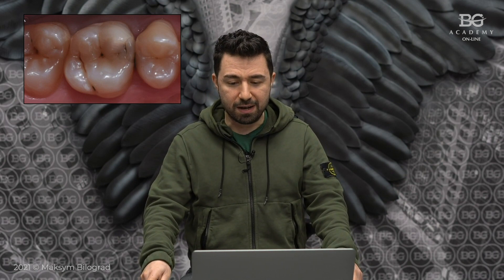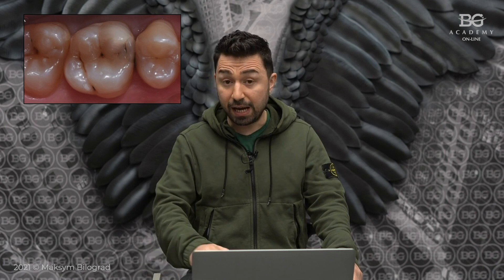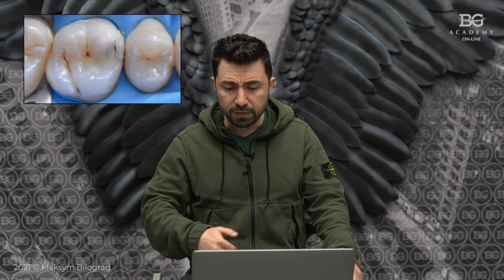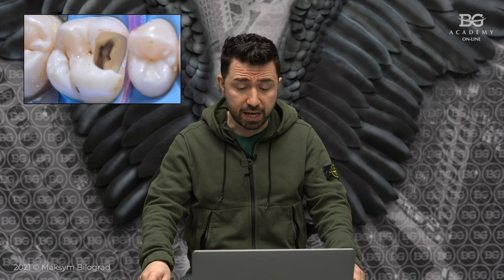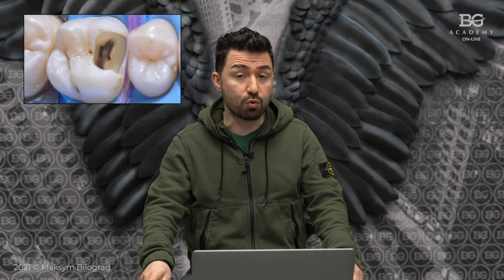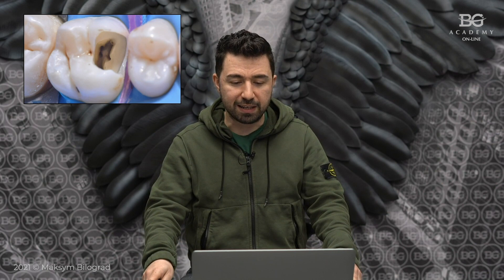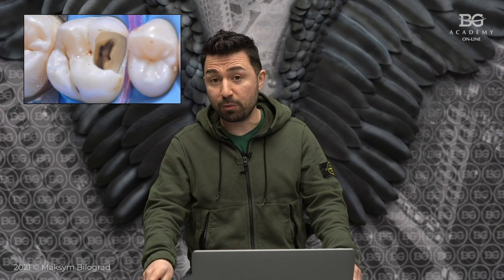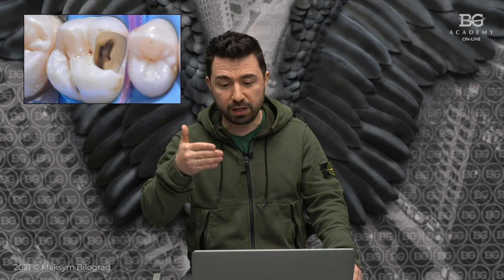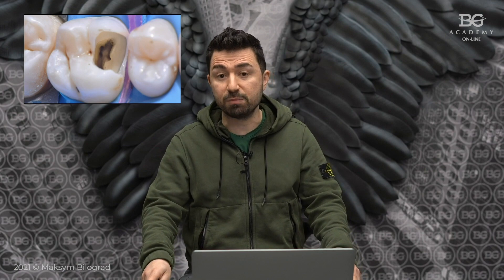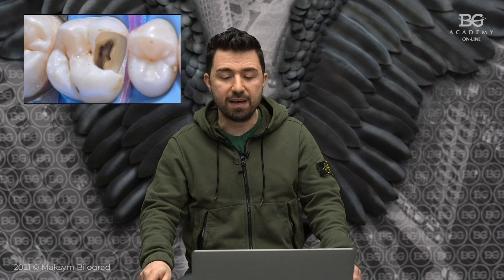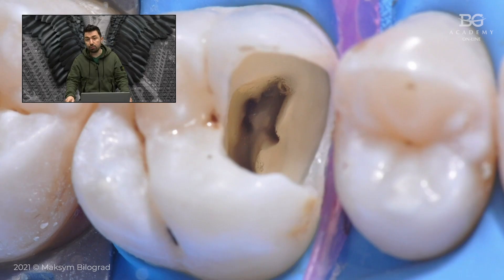We have irreversible pulpitis of an upper first premolar and the patient has very acute pain. He came with a big cavity. I isolated with a rubber dam system and we started to excavate caries and to open the pulp chamber to get endodontic access. One clinical tip I would like to share: you can see the wedge that I placed between the teeth, and the wedge helps you to protect the rubber dam during the process of preparation.